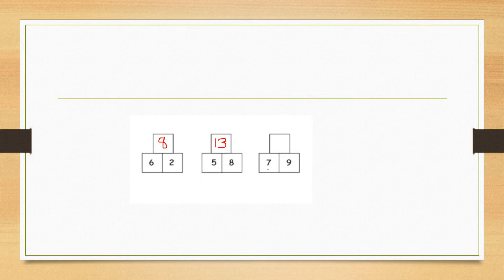Next, we have to add 7 and 9. We have to take 9 in our mind and 7 in our fingers. Then we have to count: 10, 11, 12, 13, 14, 15 and 16. So 7 plus 9 is equal to 16.